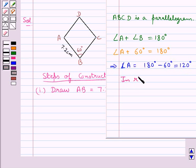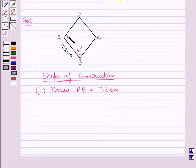Thus now we have in rhombus ABCD, angle A is 120 degrees, angle B is 60 degrees and AB is 7.2 cm. So in the rough sketch we mark angle A as 120 degrees.